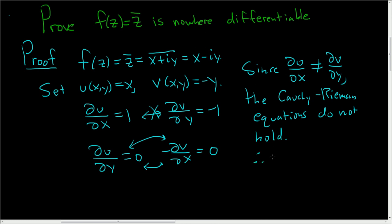So therefore, f is nowhere differentiable, right? It never holds at any point. 1 is never equal to negative 1. So that's how you use the Cauchy-Riemann equations to show something is not differentiable.